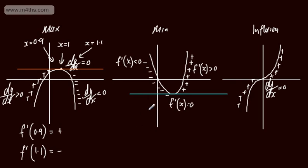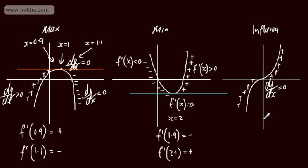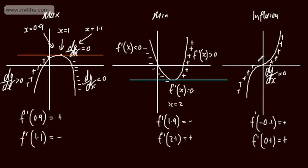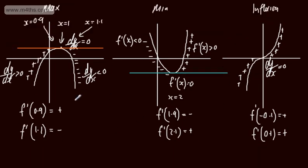For a minimum, let's say x equals 2. We evaluate the gradient at 1.9 and at 2.1. We see that 1.9 gives a negative value and 2.1 gives a positive value, so we deduce that it is a minimum point. For the point of inflection at x equals 0, we evaluate f dashed at negative 0.1 — giving a positive value — and f dashed at 0.1 — also giving a positive value. If it were negative x cubed, we would have negative and negative either side. This was the manual way.